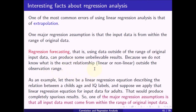As an example, consider a linear regression equation describing the relationship between a child's age and IQ levels. If we apply that equation to adult input data, it would produce completely spurious results. Therefore, one of the major regression assumptions is that all input data must come from within the range of the original input data.